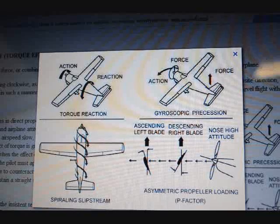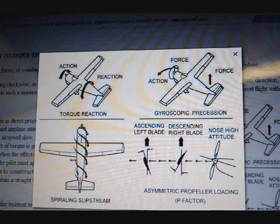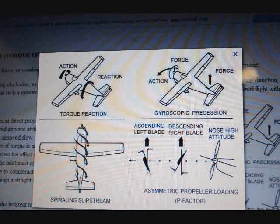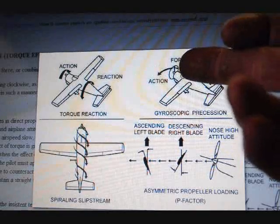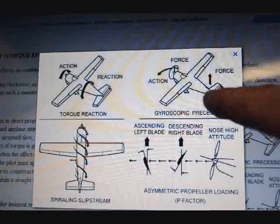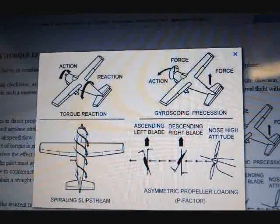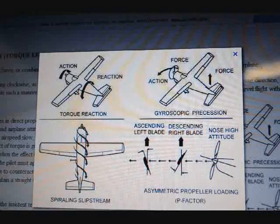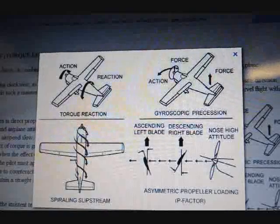That provides one of the left-turning tendencies. The other is gyroscopic precession. If you had a disc spinning and you put a force up at the top of it, just like this propeller is spinning and we put a force at the top, that force is felt 90 degrees in the direction of the rotation. We push at the top and it's felt 90 degrees in the direction.